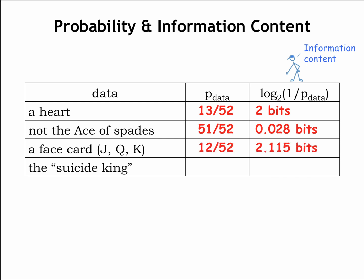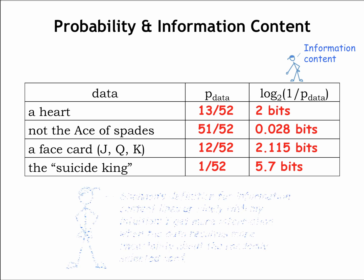There are 12 face cards in a card deck, so the probability of this event is 12 over 52, and we would receive 2.115 bits. A bit more information than learning about the card's suit, since there is slightly less residual uncertainty. Finally, we get the most information when all uncertainty is eliminated, a bit more than 5.7 bits. The results line up nicely with R and Mr. Blue's intuition. The more uncertainty is resolved, the more information we have received. Now try your hand at computing the information content for a few more examples in the following exercises.